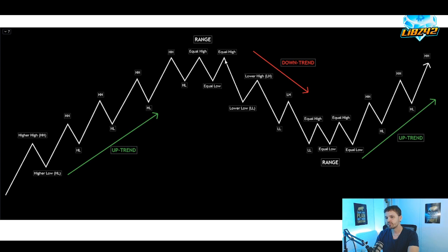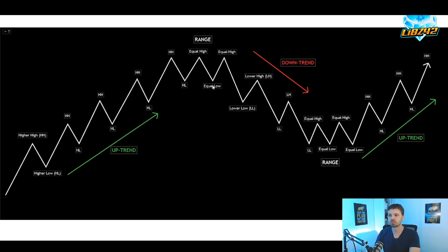Here you can see the first sign of a changing behavior of this trend — this level right here. You have that high right there, and then you have the equal high to the right. So this right here is the first indication that there is a possible break in market structure coming. What needs to happen for this to be a break in market structure? You see a high, then an equal high, and a higher low — a high, higher low, equal high.